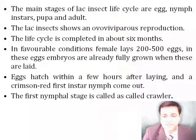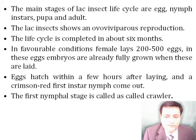The lac insect life cycle consists of main stages: egg, nymph instars, pupa, and adult. Lac insect reproduction is ovo-viviparous. The life cycle is completed in approximately six months. A single female lays 200 to 500 eggs, which are developed inside the body before hatching. The first instar is crimson red in color.